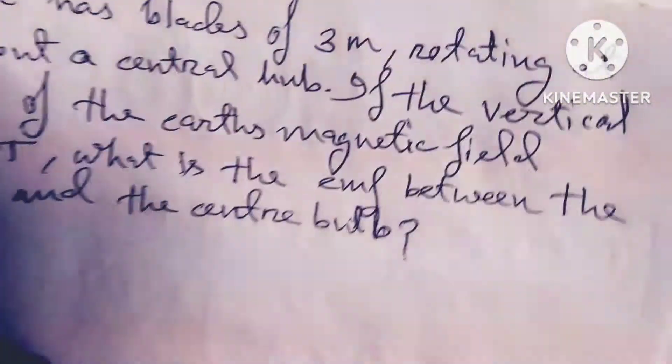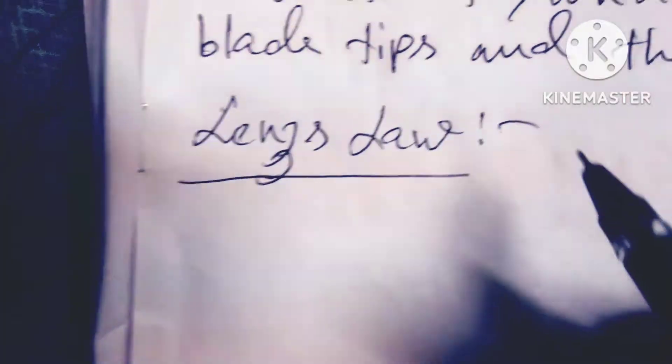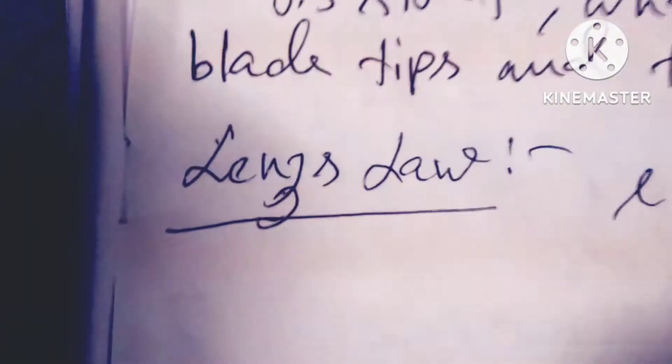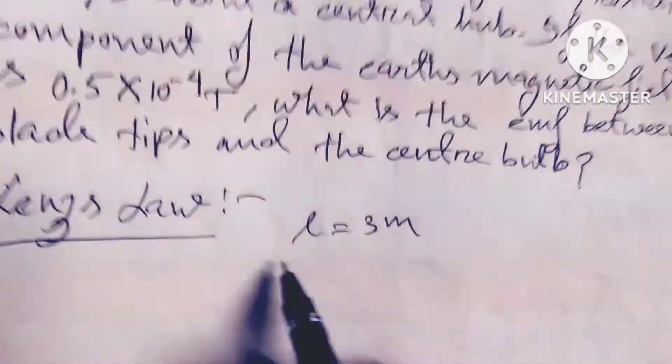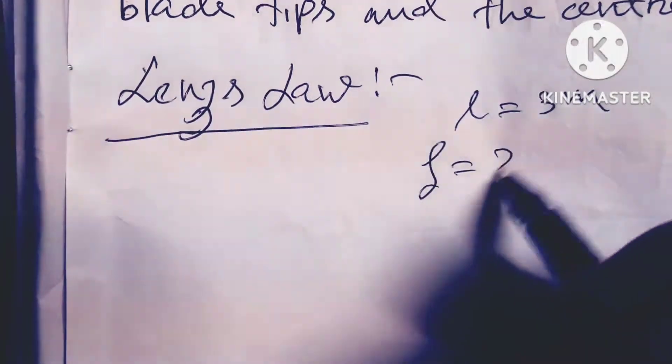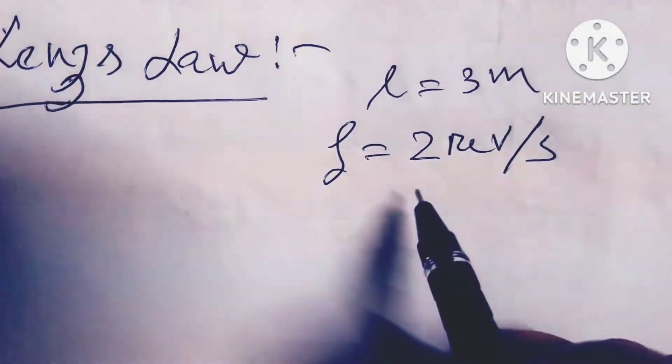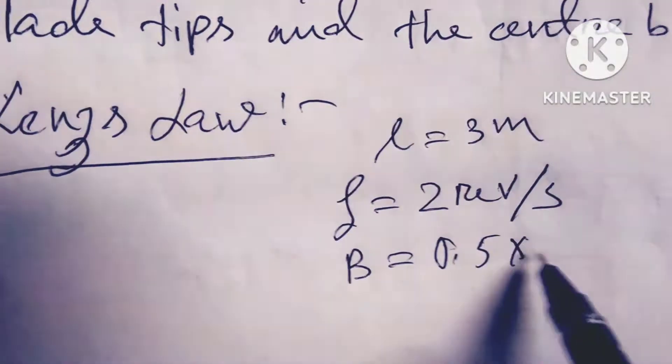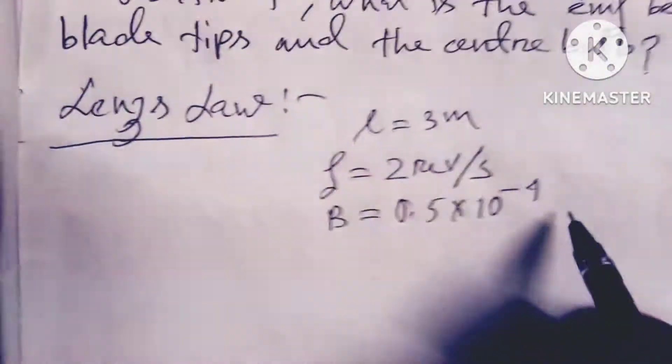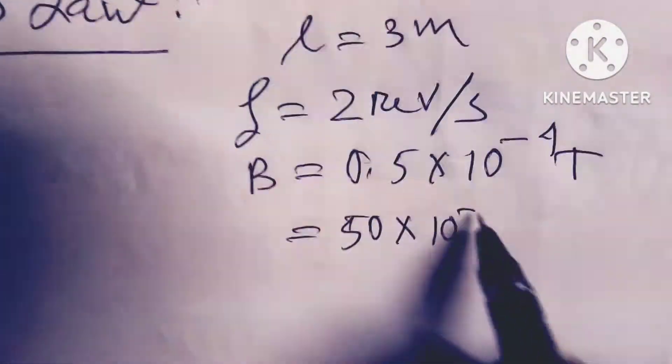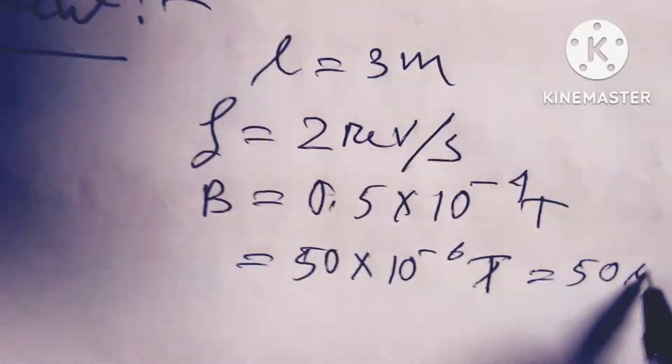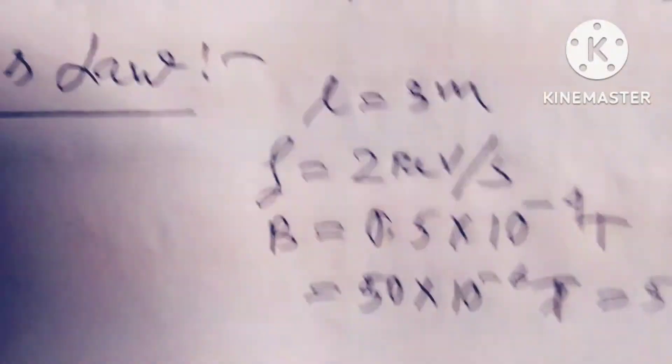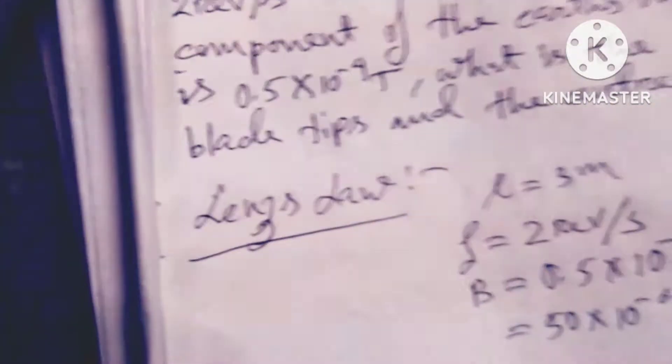The problem is based on Lenz's law. So L equals 3 meters, F is equal to 2 revolutions per second, and B is equal to 0.5 × 10⁻⁴ Tesla, which equals 50 × 10⁻⁶ Tesla, equal to 50 microTesla.